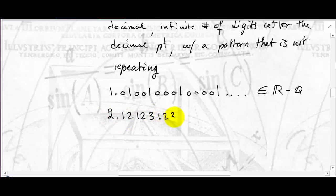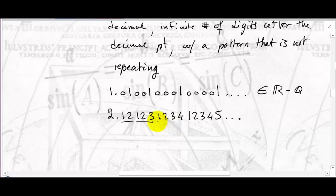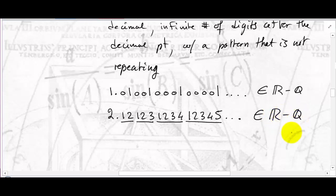There are so many other types of non-repeating patterns. For example, 1.1212312341234 5... — the pattern is 1, then 1 2, then 1 2 3, then 1 2 3 4, and so on. I know what comes after, but the pattern is not repeating, so this is also an irrational number. Other examples include pi and e. The set of irrationals is very large — we'll talk about its size in class.